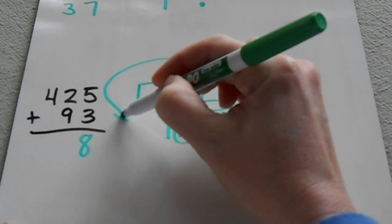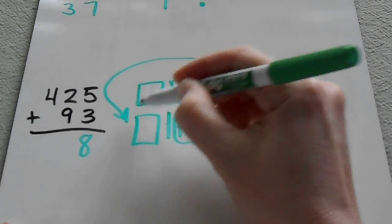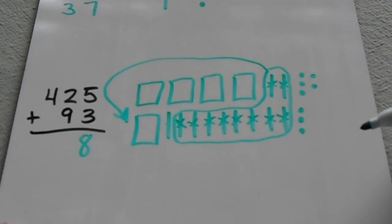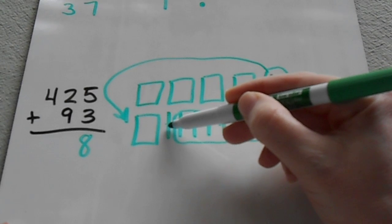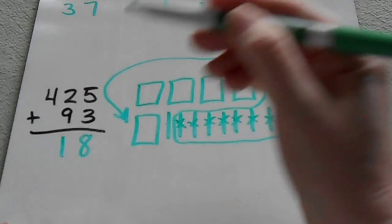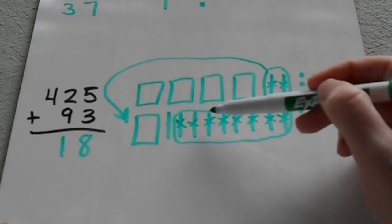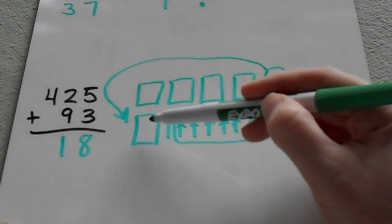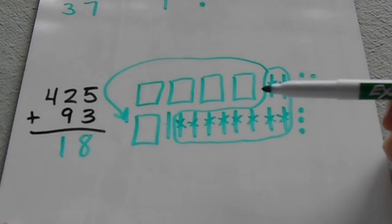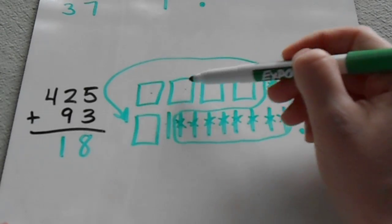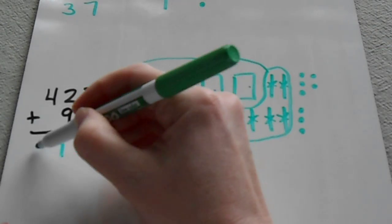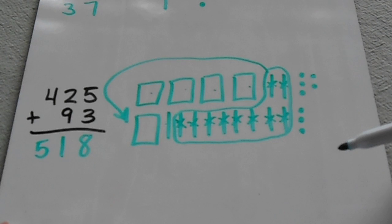I'll draw an arrow to show that I've made a new 100. Now all that I have left for my tens is this one ten, because I've taken all of these 10 tens and put them into a new 100. Now I can count up my hundreds place: 1, 2, 3, 4, 5. I have 5 hundreds.